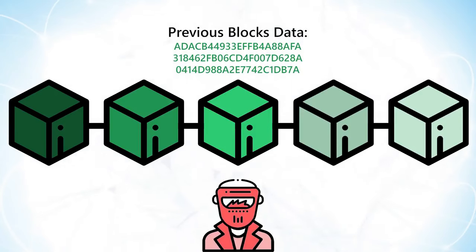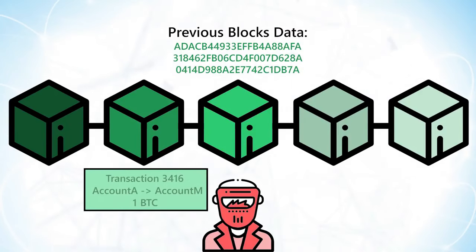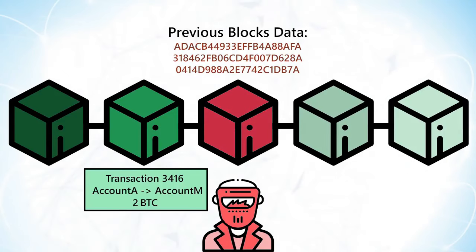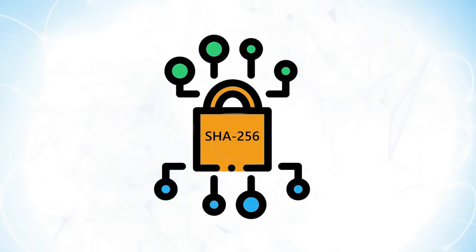Imagine a hacker attacks block 3 and tries to change the data. Because of the properties of hash functions, even a slight change in data changes the hash drastically. This means that any change made in block 3 will change the hash stored in block 2. This in turn will change the data and the hash of block 2, which results in changes in block 1, and so on. This is exactly how blockchains attain immutability. Any tiny changes in the data are immediately noticed and nullified by each preceding block.